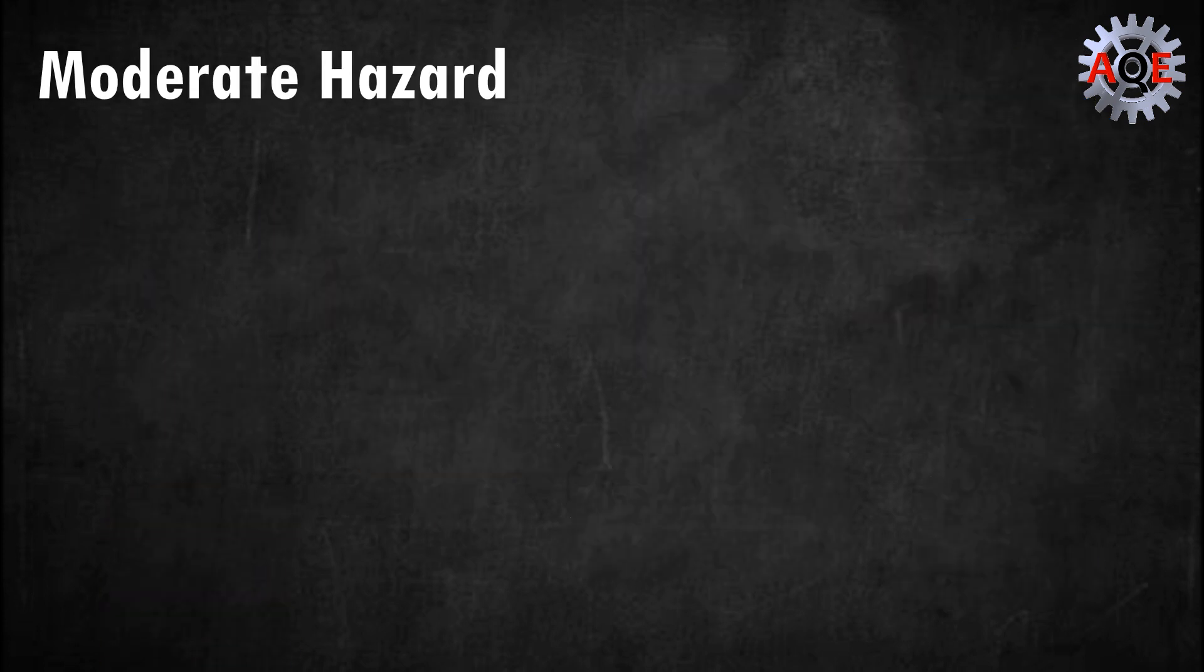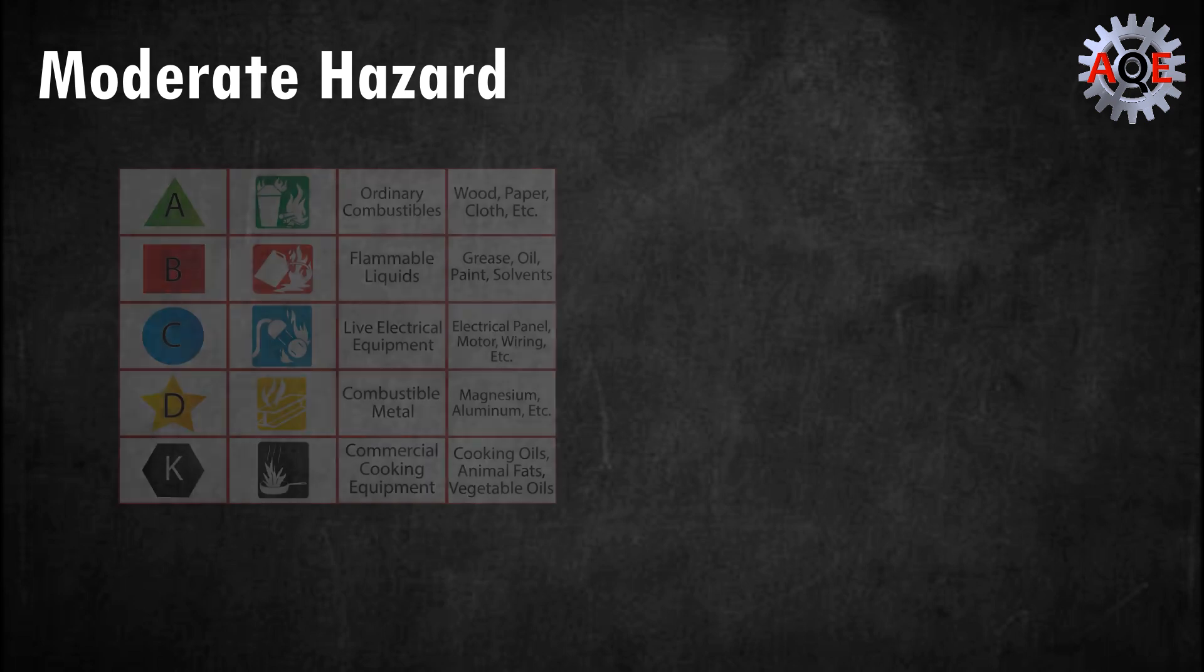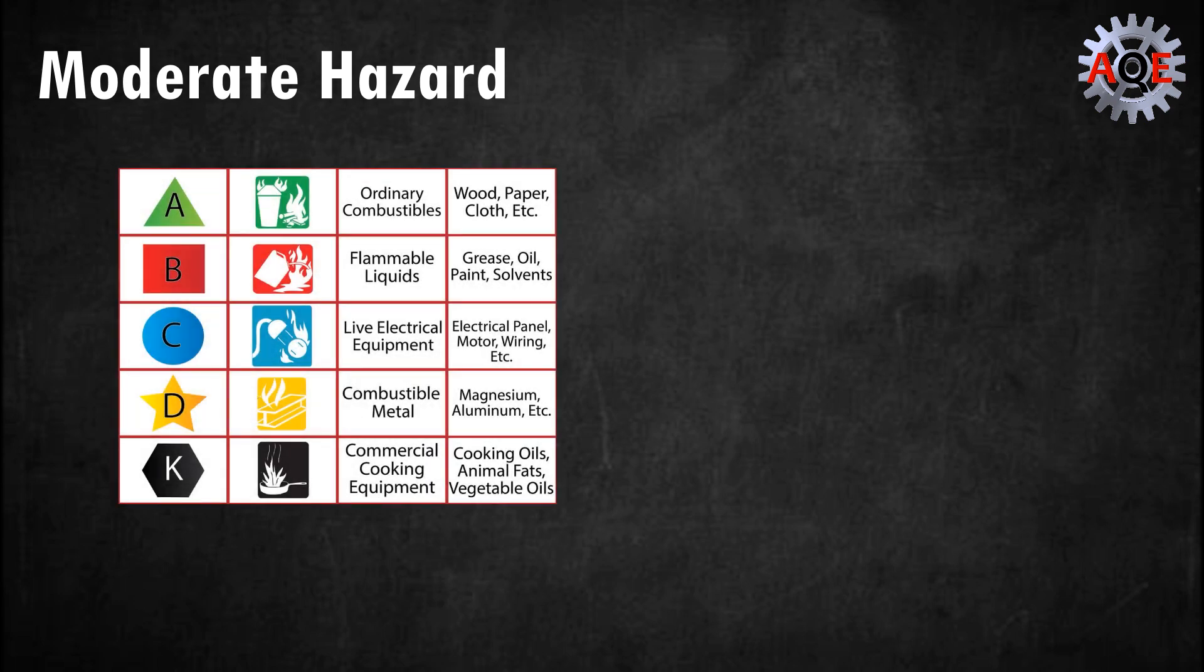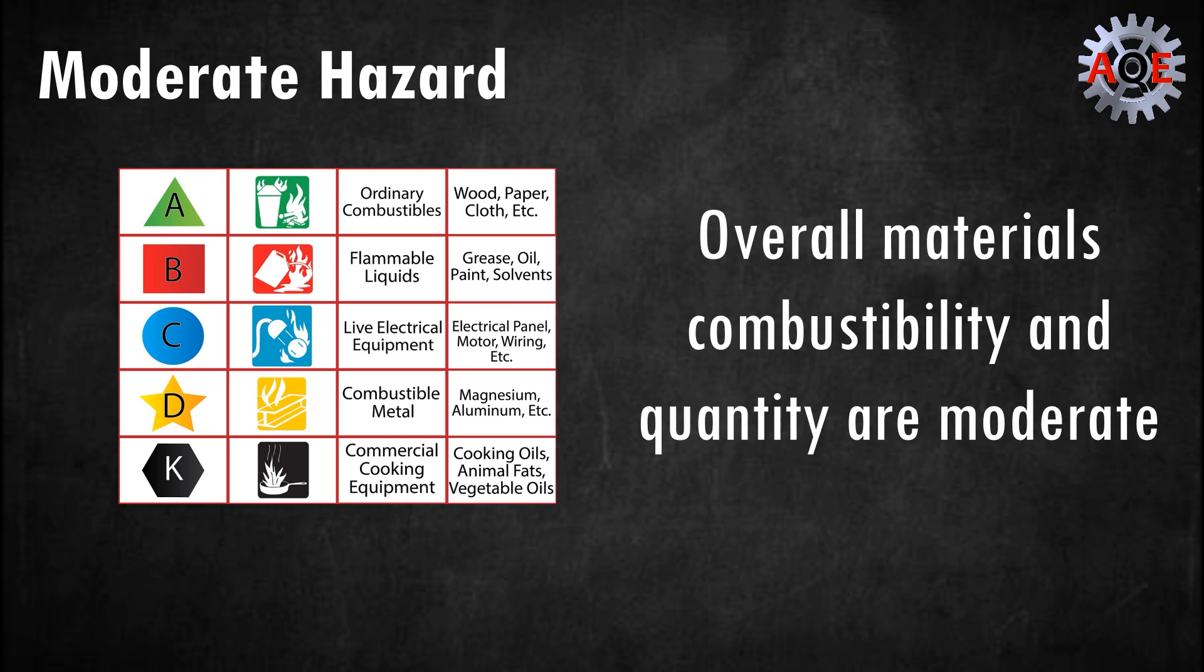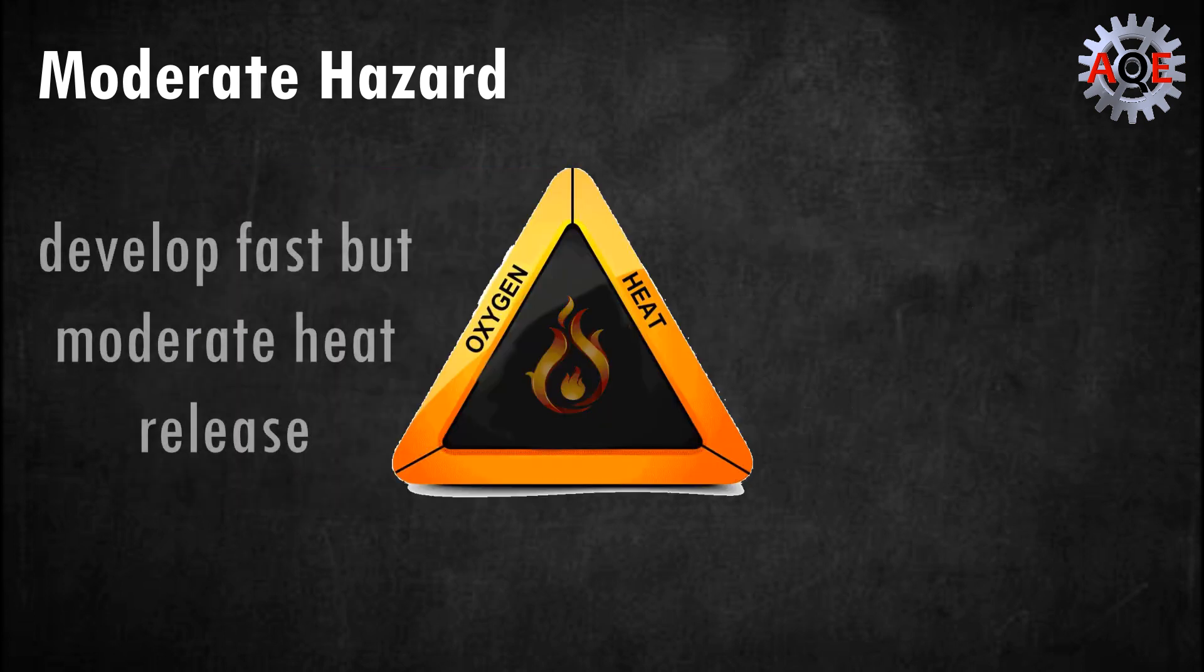Moderate hazard. Buildings in this category are seen as moderate hazard locations where combustibility and quantity of contents are moderate. Any fire that began in one of these environments would most likely develop fast and have a moderately enhanced rate of heat release.